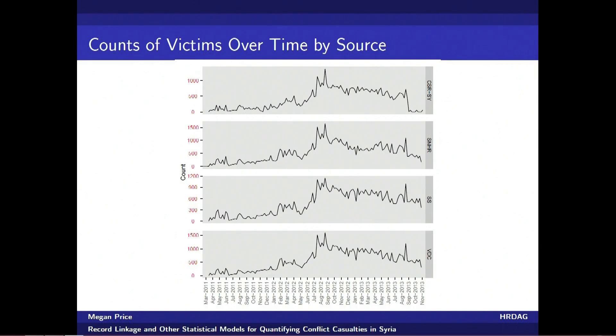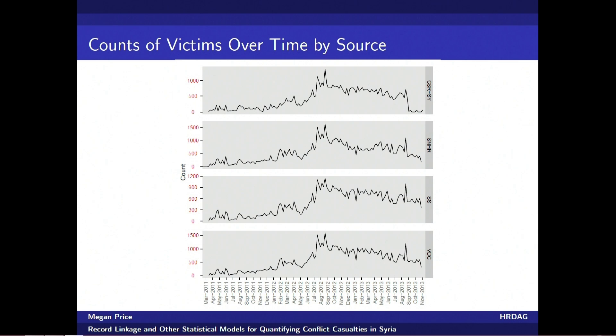So how do we get it right? We start with multiple data sources. In this case, four large documentation groups: the Syrian Center for Statistics and Research, the Syrian Network for Human Rights, the Syrian Shuhada website, and the Violation Documentation Center. And what we're looking at here are the counts of victims documented by each of those four sources over time. The magnitude is different — the y-axes are a little bit different for each source — but the pattern over time looks to be the same. So starting from this point, we would be very tempted to conclude that these data sets are all telling us the same story. But our job as data analysts is to recognize that each of these data sources are incomplete in different ways, and are telling us different stories, and to adjust for those differences — to model those documentation patterns.